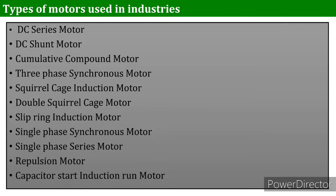The capacitor start induction run motor has a fairly constant speed and high starting torque; however, speed control is not possible in this type of motor. It is generally used for compressors, refrigerators, and small portable devices.